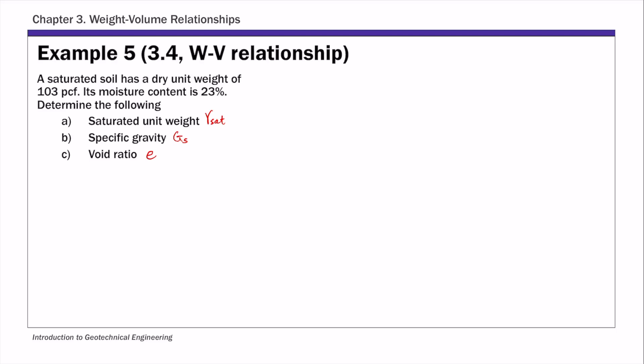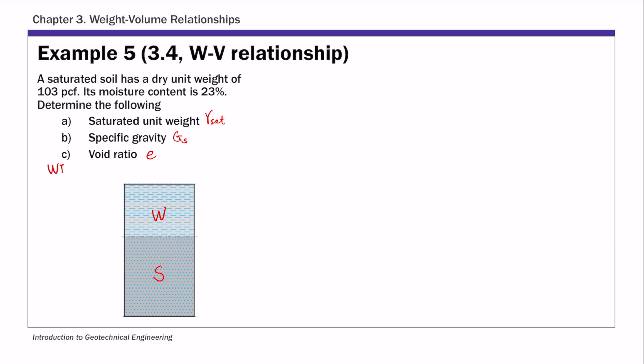For this problem, we are going to use the phase diagram to solve it. This is a saturated soil, so the first step when drawing a phase diagram is to determine the correct number of phases. For saturated soil, there are two phases: solids and water. We're going to complete the weight and volume sides of this phase diagram — weight in pounds and volume in cubic feet.